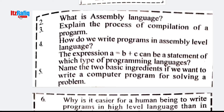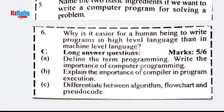What is assembly language and how to write a program in it — this is not required. Why is it easier for a human being to write a program in high-level language than in machine language? Because humans can easily read and write normal language, like English, rather than binary digits written in zeros and ones. That is why programmers prefer to write programs in high-level language rather than machine language. Defining the term is already in the book.